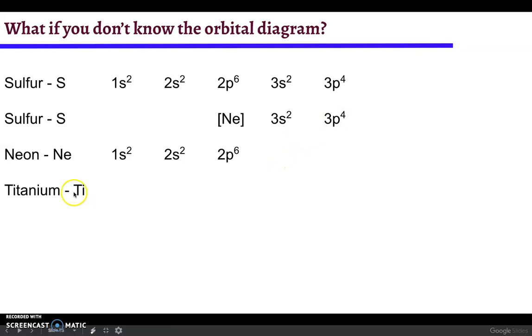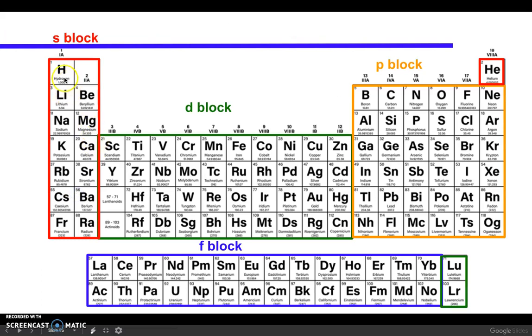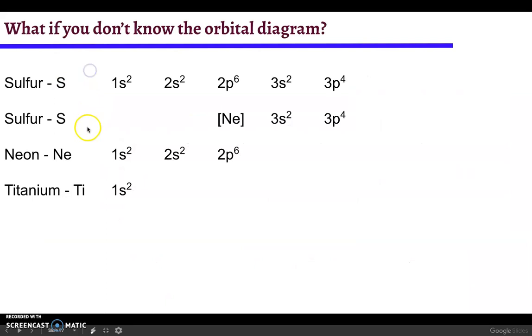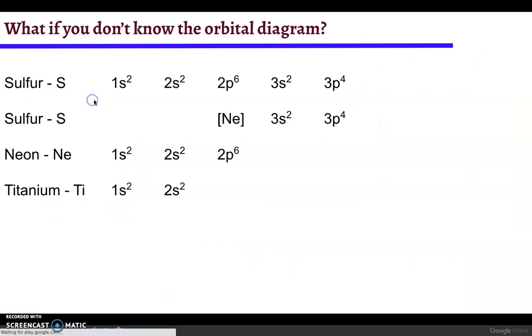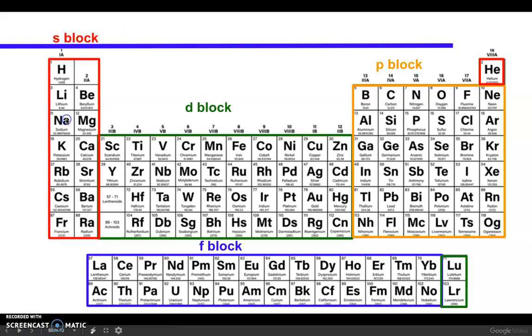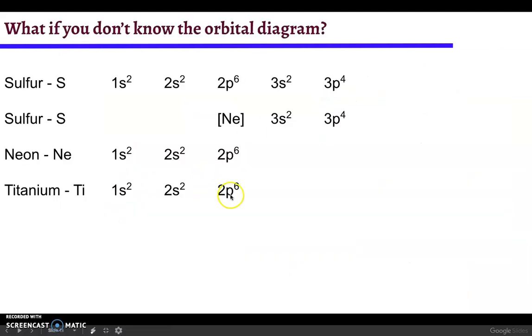Let's do a little bit more complicated example next: titanium. We're going to follow it out the same way. We start off in row 1 in the s block, so 1s2. Now we're in row 2 in the s block, so this should be 2s2. Now we're in row 2 in the p block. P block can hold six electrons, so up next is 2p6.